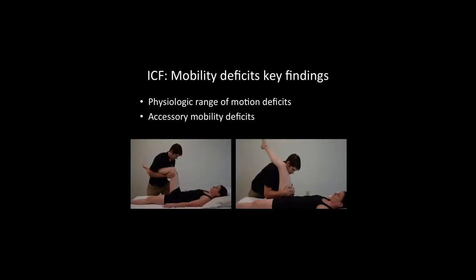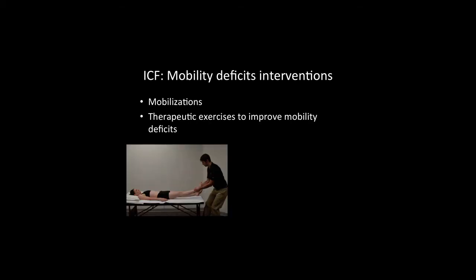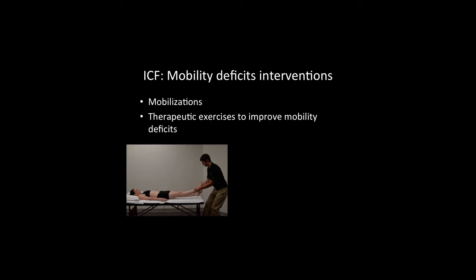This relates to the International Classification of Functioning and Health Mobility Deficits Classification, of which the key findings include physiologic range of motion deficits and accessory mobility deficits. The interventions for this category include mobilizations and therapeutic exercises to improve mobility. This is the clinical guidelines from the Orthopedic Section of the American Physical Therapy Association on Hip Pain and Mobility Deficits.